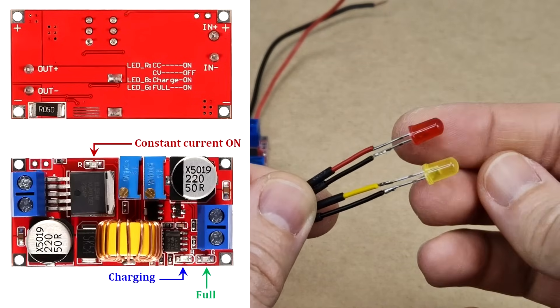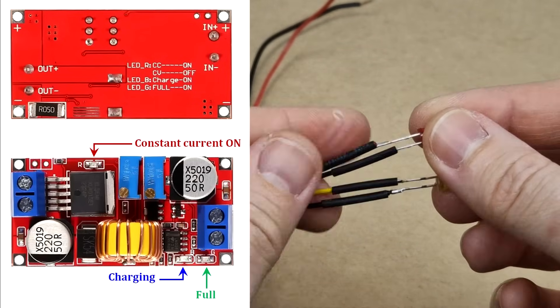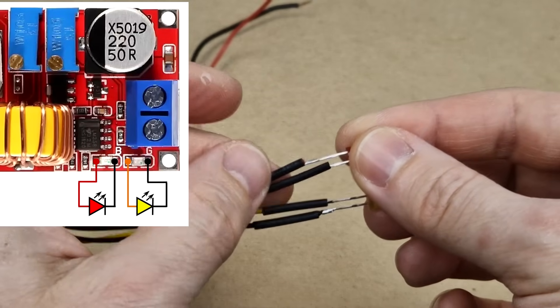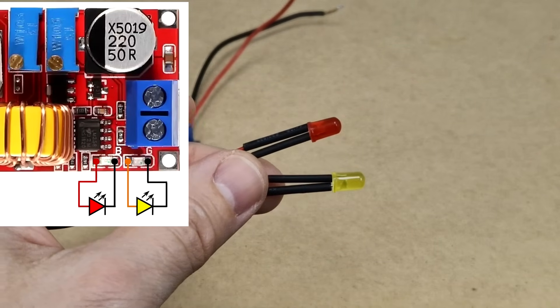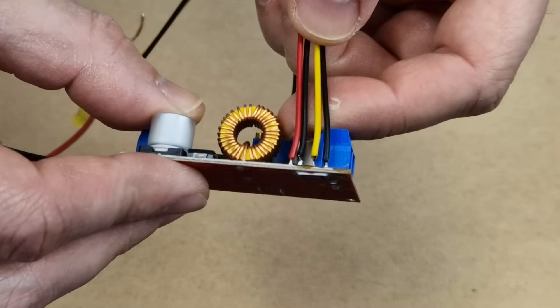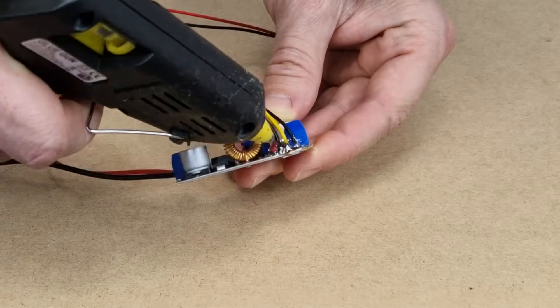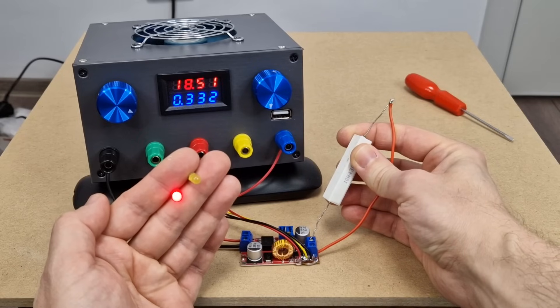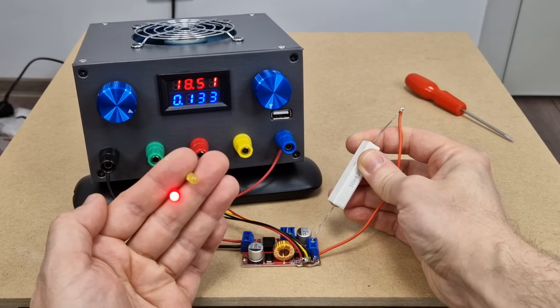These are the LEDs on the charging converter. I replaced two of them and extended the wires. Red for charging and yellow for fully charged. You can also think of yellow as ready or standby. I'm going to add some hot glue to the base of these thin wires so they don't break from the board. Let's test the LEDs: charging, ready, charging, ready.